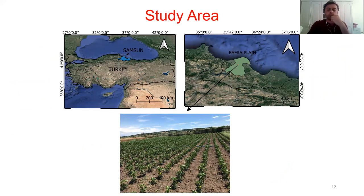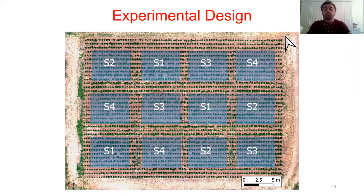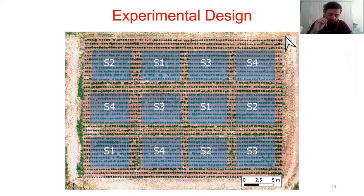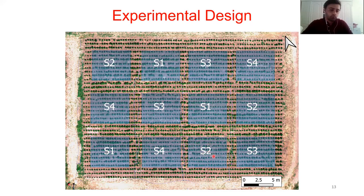In the material and methods section, this study was conducted in Turkey. The climate of the study area is sub-humid, and the soil texture is almost clay. We used bell peppers as the crop. Bell pepper seedlings were transplanted on May 15, 2019. We had four irrigation treatments with three replications: S1 is full irrigation, S2 equals 70% of S1, S3 equals 40% of S1, and S4 is rain-fed with no additional water. Drip irrigation was used, and soil moisture levels were measured using a neutron moisture meter.